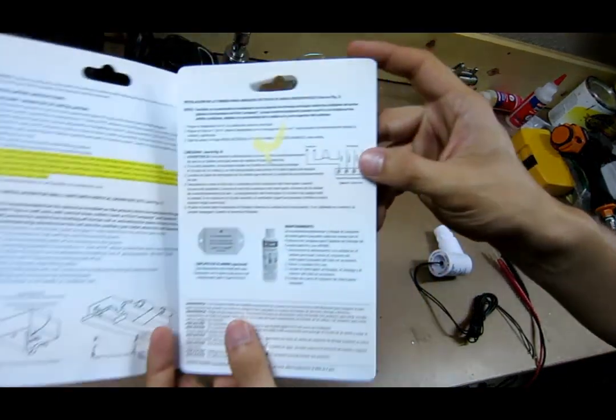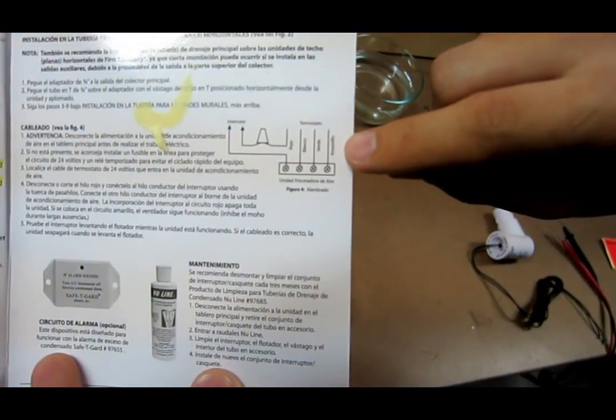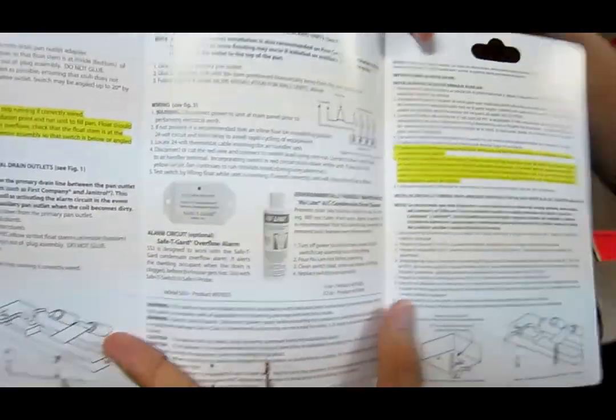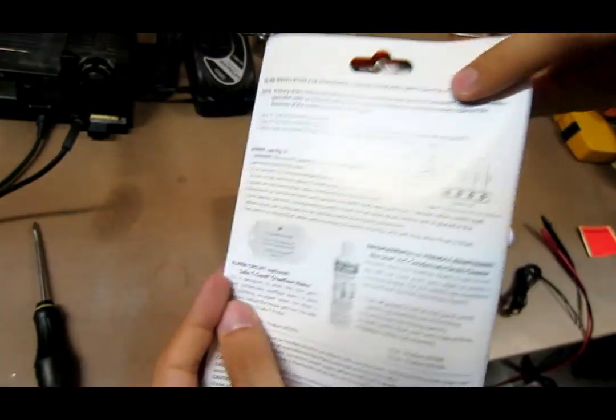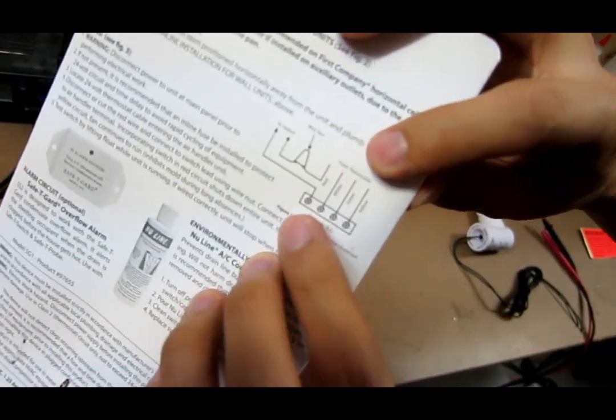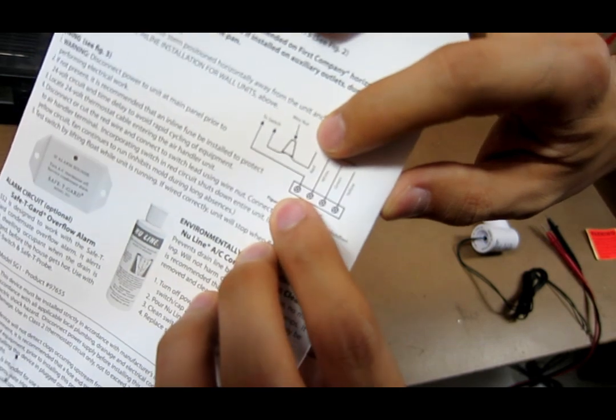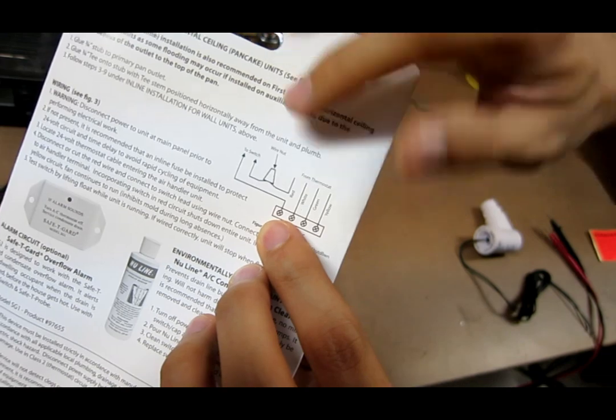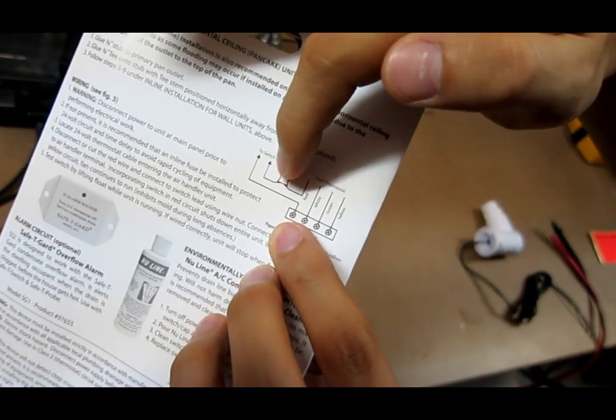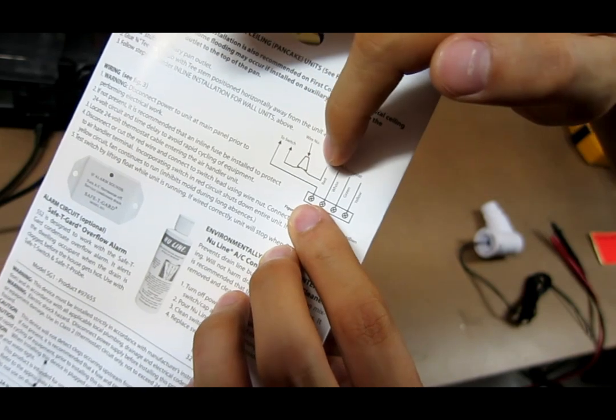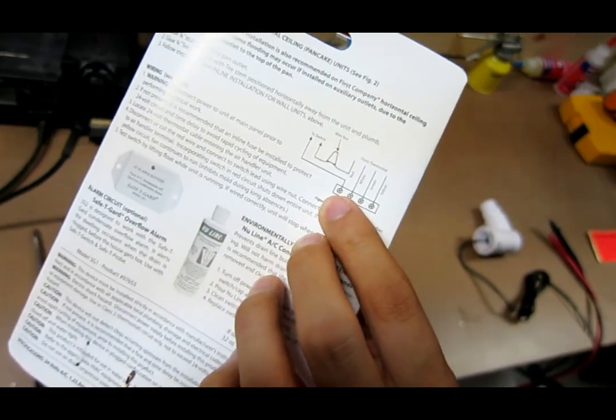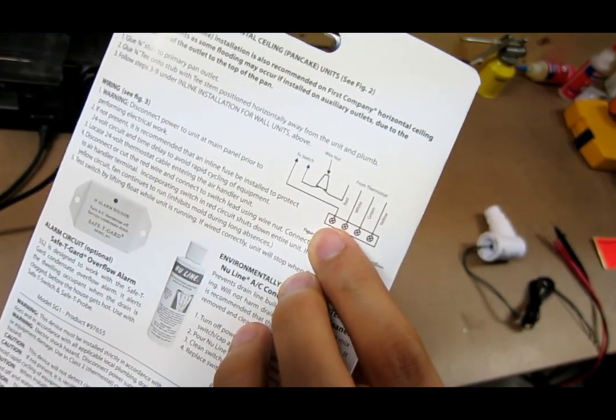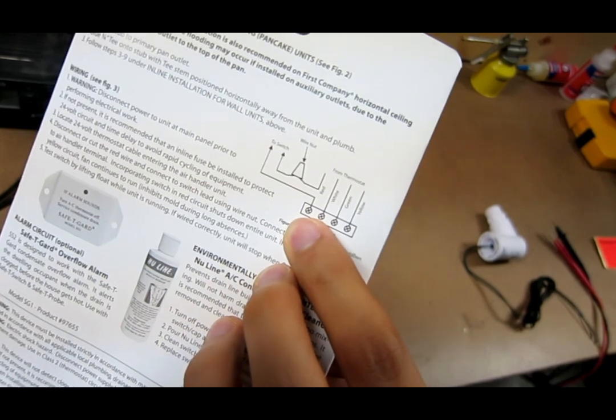So this device right here attaches to the 24 volt AC supply voltage. It's in between the return of it, so it acts like a switch. If there's too much water that condenses and builds up a flow of water, then it shuts off.